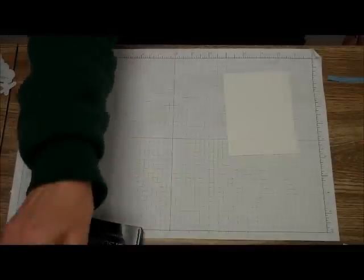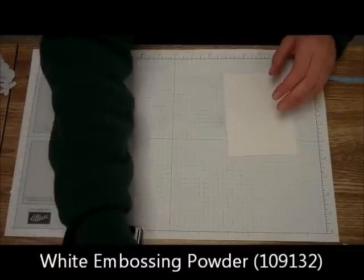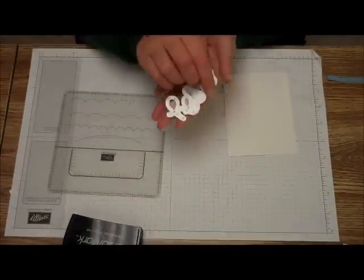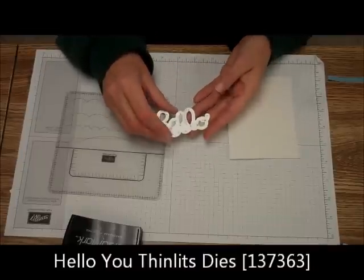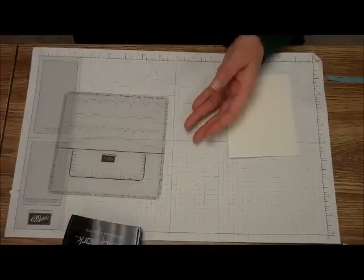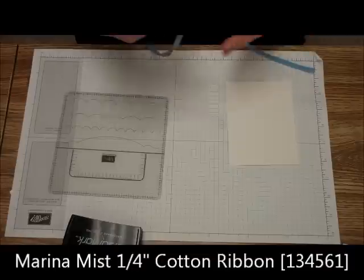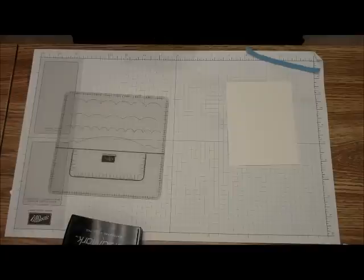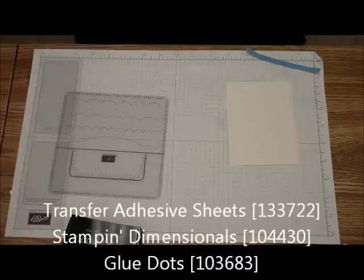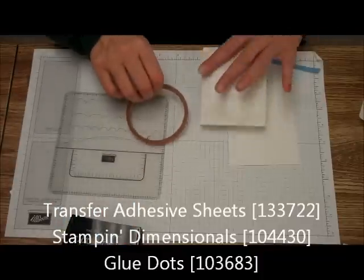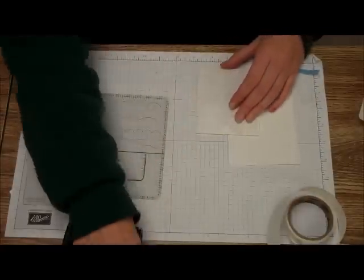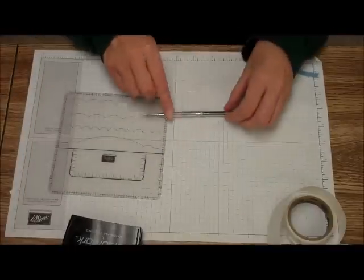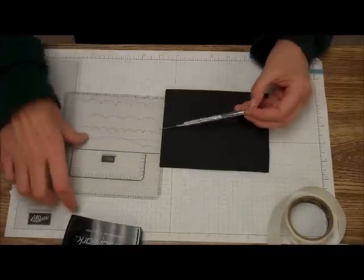What I'm also going to need is white embossing powder. I am going to be using the Essentials Paper Piercing Pack, the Hello U Thinlits that's in the Occasion Mini. I am going to be using about 4½ inches of the ¼-inch Cotton Ribbon and Marina Mist. I am going to be using some Stamping Dimensionals, some Glue Dots and some Transfer Adhesive Sheets and some Sticky Strip. I am also going to be using the Paper Piercing Tool and the Paper Piercing Mat.